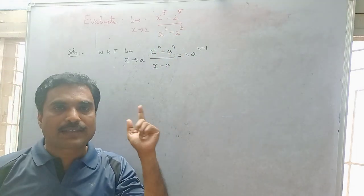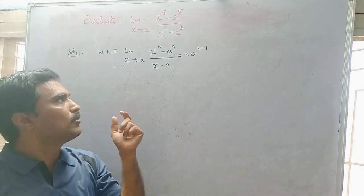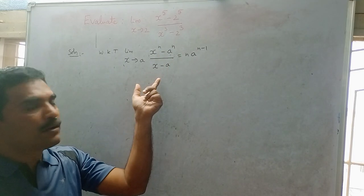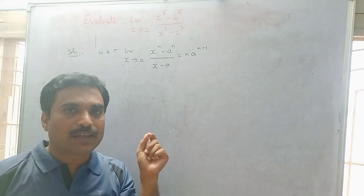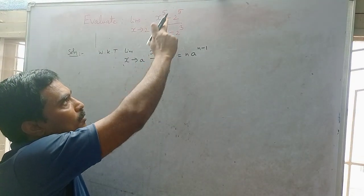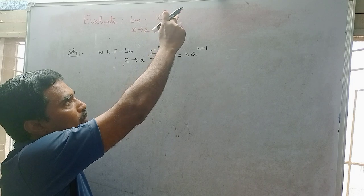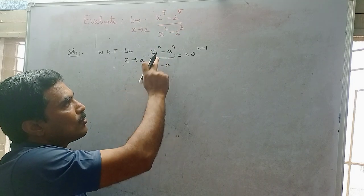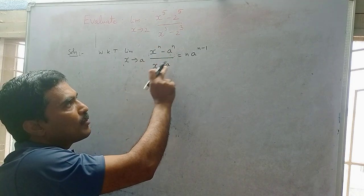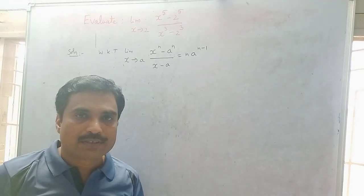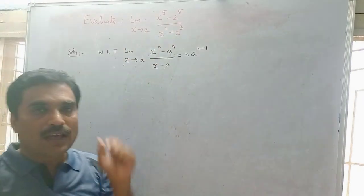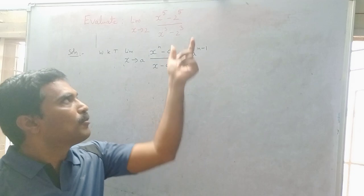The problem has (x^5 minus 2^5) divided by (x^3 minus 2^3), but the formula requires the denominator to be (x minus a) — without powers. So you can observe that the denominator here is not in the form (x minus a).